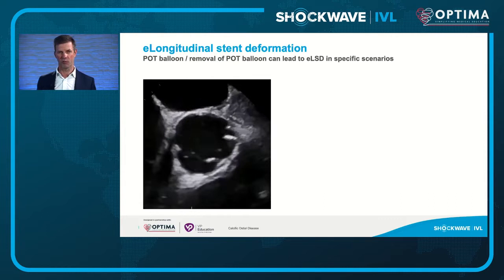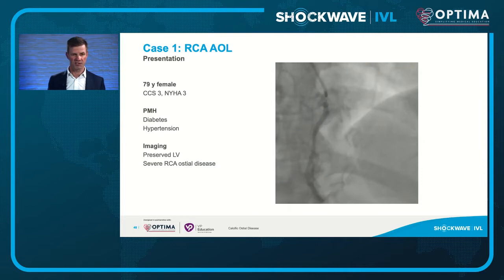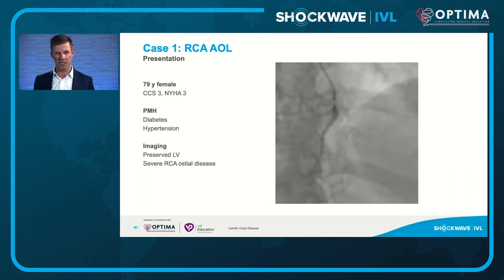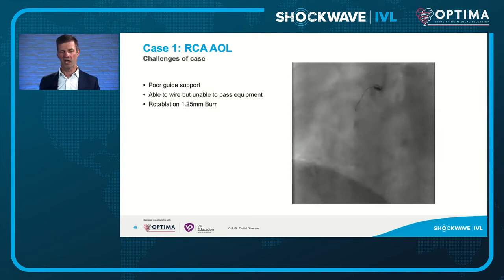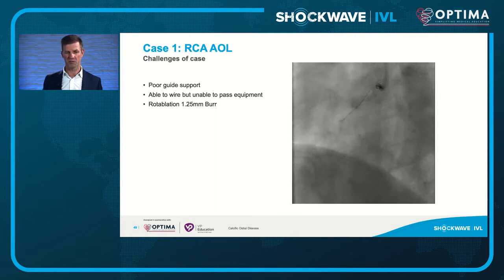First case: a 79-year-old lady with ongoing symptoms, diabetes, hypertension, and preserved LV function. Her diagnostic coronary angiogram shows a severe right coronary artery lesion. There's poor guide support — typical for aorto-osteal lesions. Unable to deliver anything on a workhorse wire, I move to a Rotafloppy wire, and unable to cross the lesion with any devices I proceed to rotablation using a 1.25 millimeter burr.